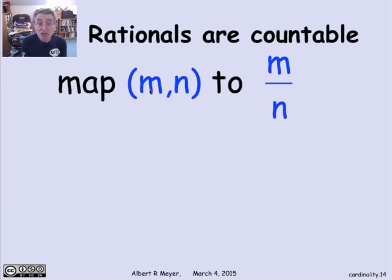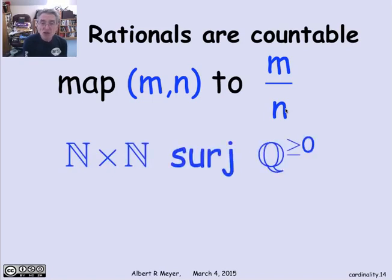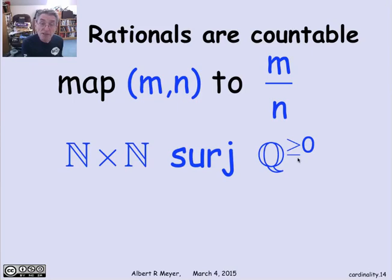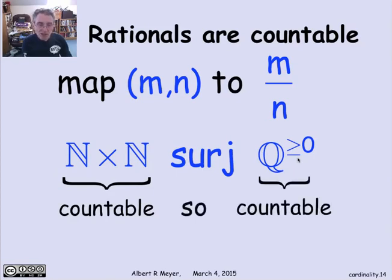We already know that pairs of non-negative integers are countable. Map a pair (m, n) to the rational number m divided by n. If n is 0, just map those pairs to your favorite rational number, say one half. That gives a surjective mapping, since every non-negative rational number can be expressed as m over n. So we have a surjection from pairs of non-negative integers, which we know is countable, onto the non-negative rationals — which means the rationals are countable, even though they seem spread out all over the number line.